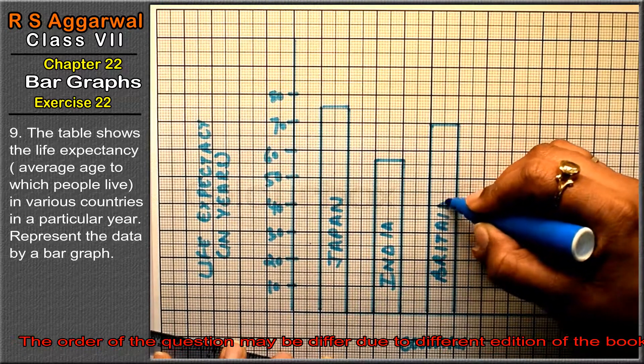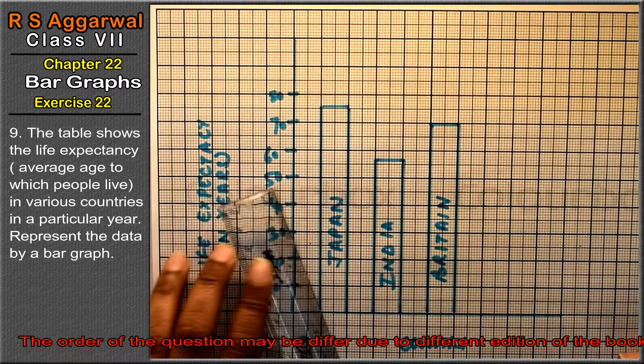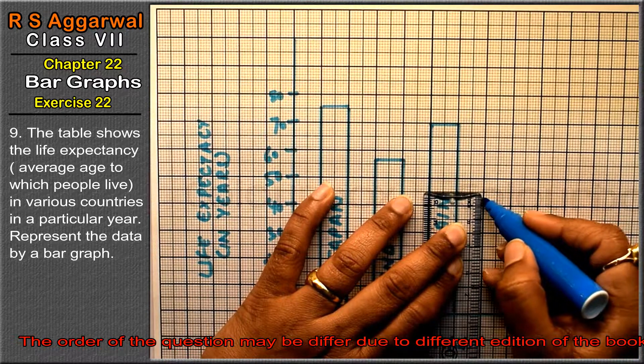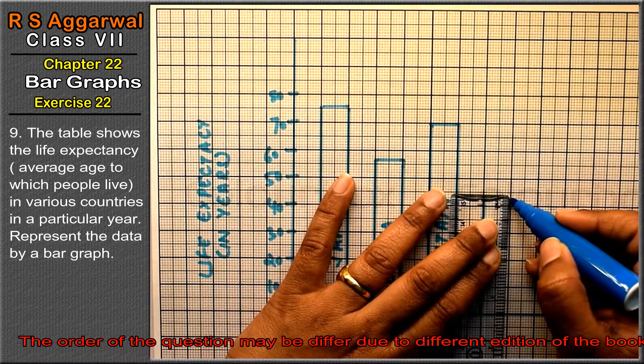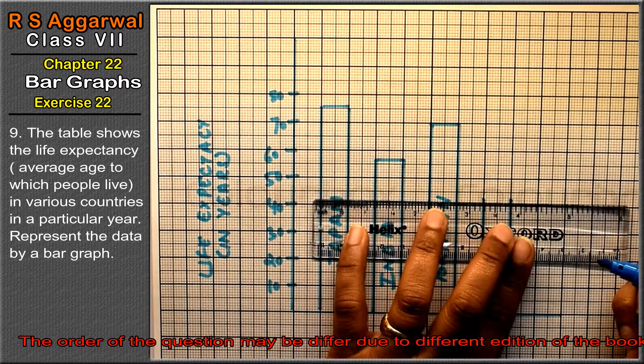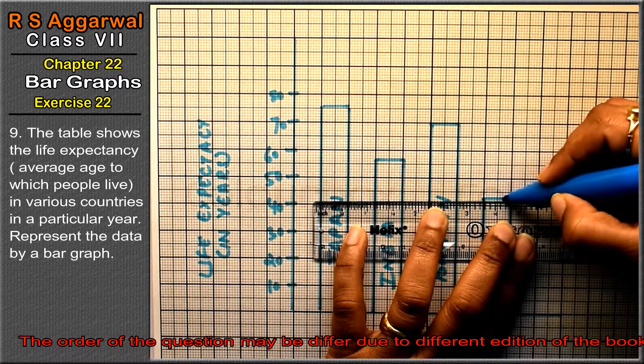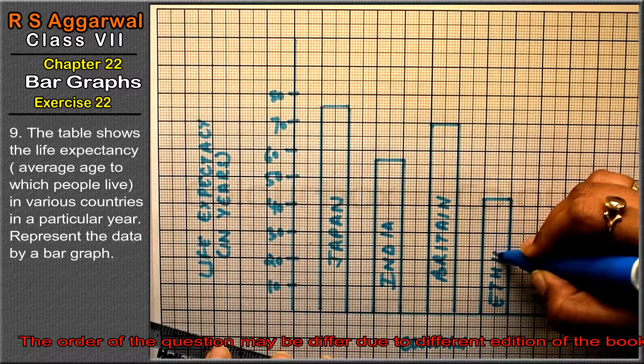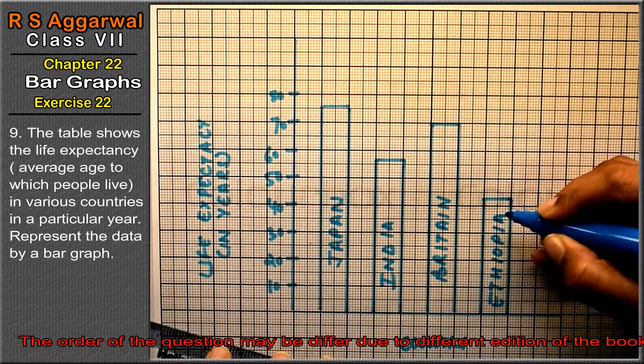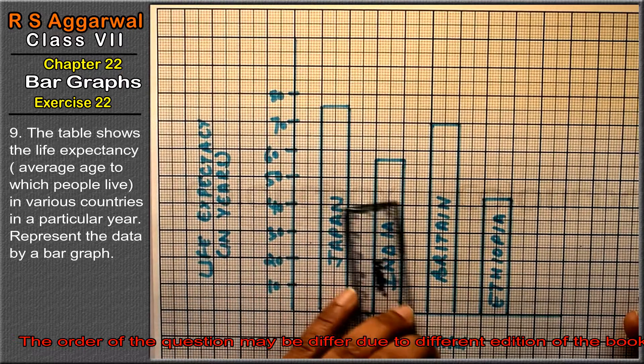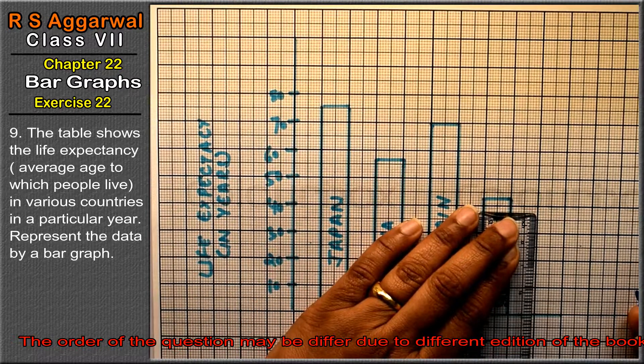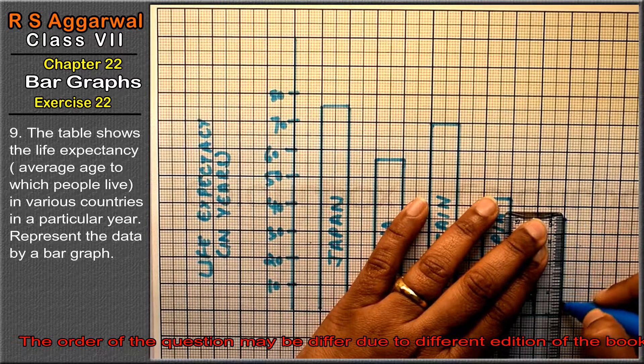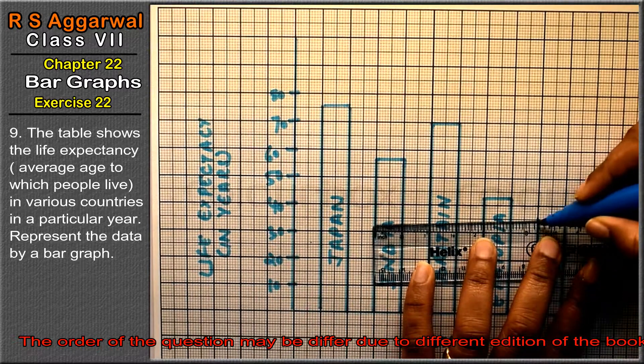Next is Utopia at 43 years - we go to 40 and put 3 points above. Last one is Cambodia at 36 years. This completes our answer for question 9.